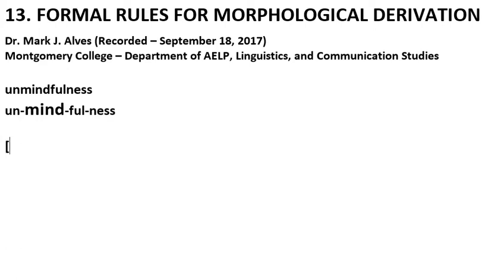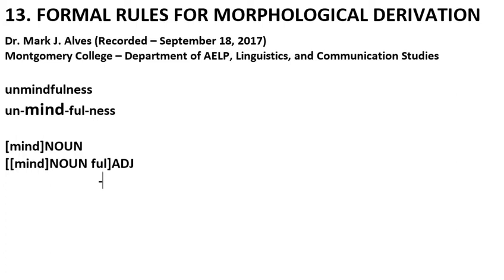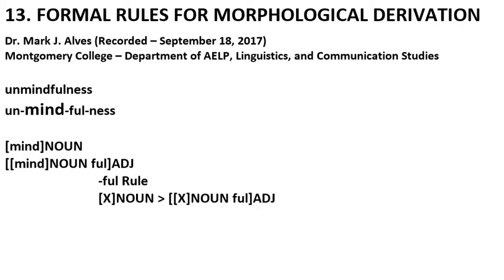Let's start with 'mind' — that's our noun. We'll use that as our input to derive first an adjective. When you add the suffix '-ful,' you get an adjective. Let's call this the 'ful rule': when you take any noun X and add '-ful,' you get an adjective. That's the output, and the meaning is 'to have plenty of X.'